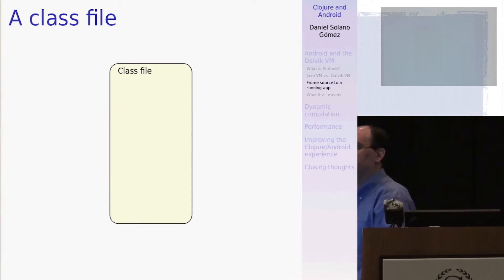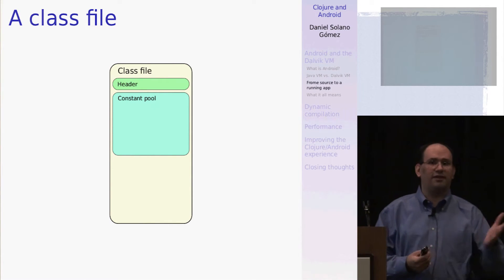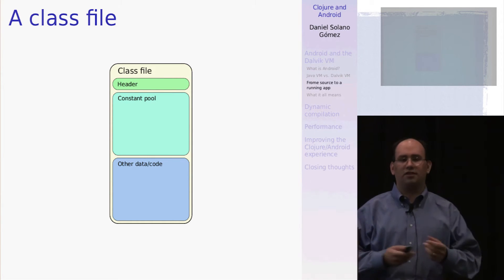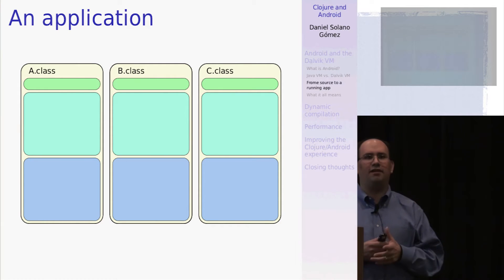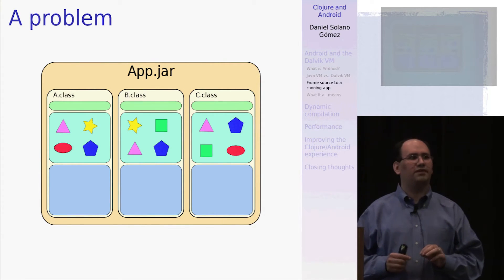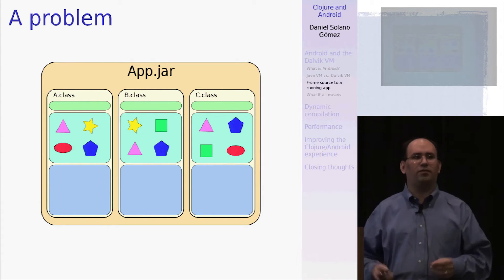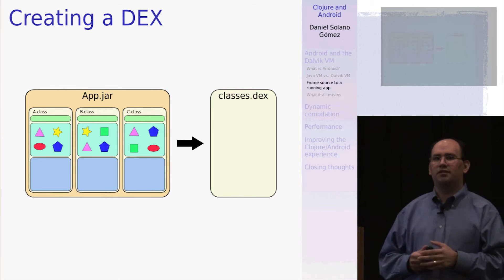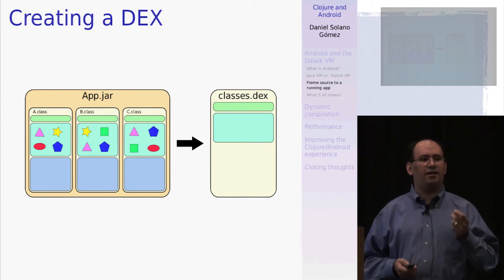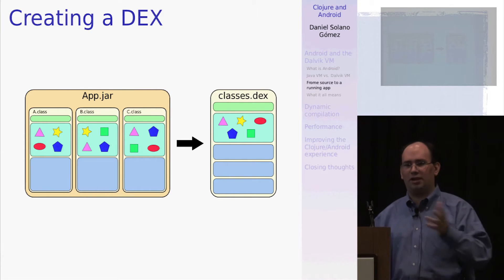So when you compile something in Java, you get a class file. And a class file contains a header, a constant pool which contains things such as class constants but also other things such as method names and class names, and then some other stuff which includes the code itself that you're interested in running. So in a given application, you normally have lots of these different class files, and they're generally packaged up in a jar file. One of the problems, at least for Android, is that a lot of the constants in these constant pools are repeated from one class to another.